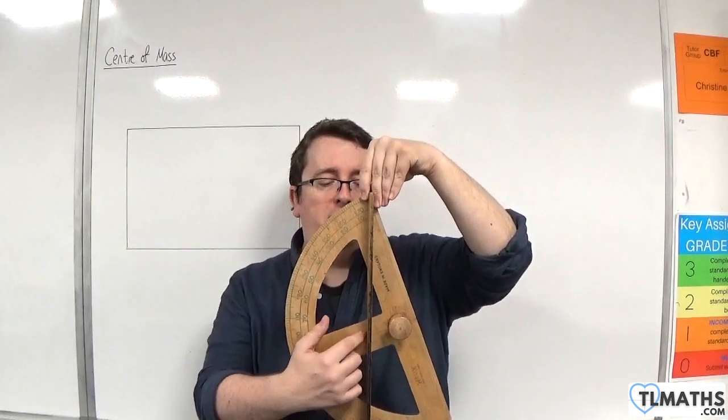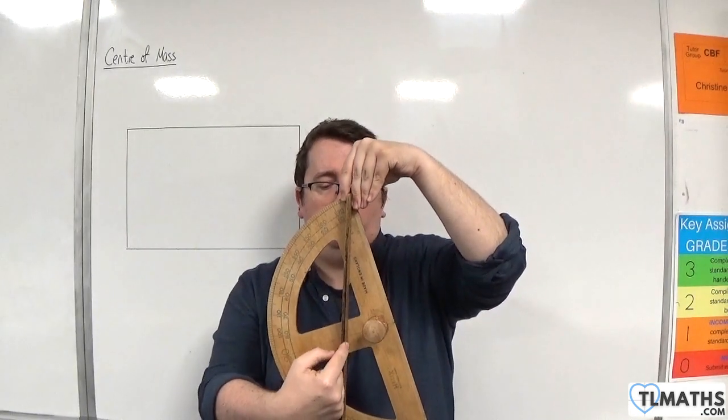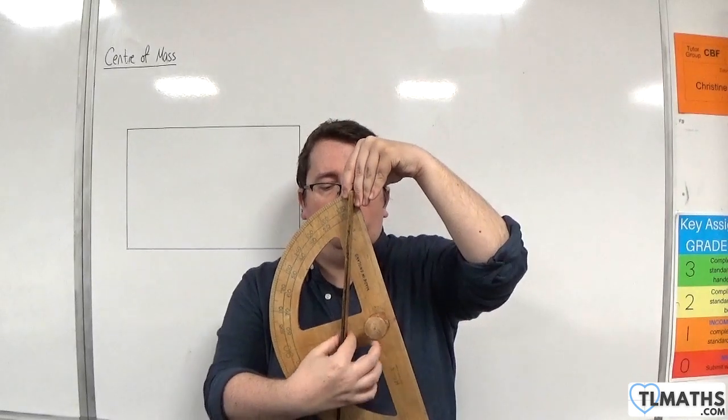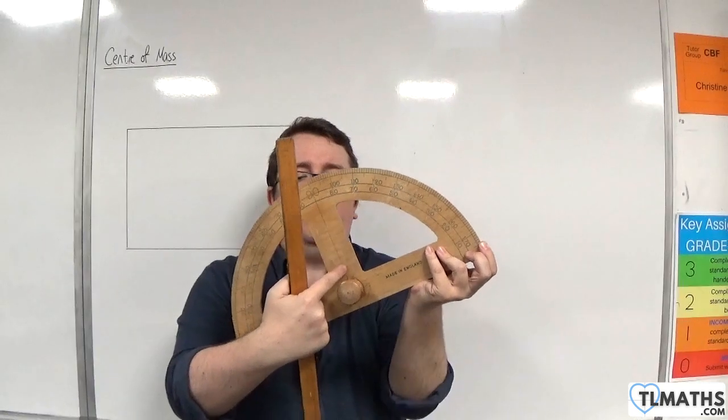So the centre of mass of the protractor, if it's on the line of symmetry of the protractor, has to be around about there. So it's about there is my centre of mass of the protractor.